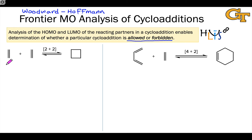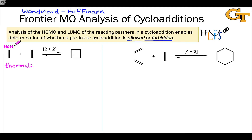Let's start by thinking through cycloadditions and dividing up the cases into thermal and photochemical reactions. In the case of a thermal reaction, to use the frontier MO analysis approach to determine whether a cycloaddition is allowed or forbidden, we look at the HOMO of one molecule and the LUMO of the other. It actually does not matter which one we look at the HOMO of and which one we look at the LUMO of — the conclusion will be the same regardless.